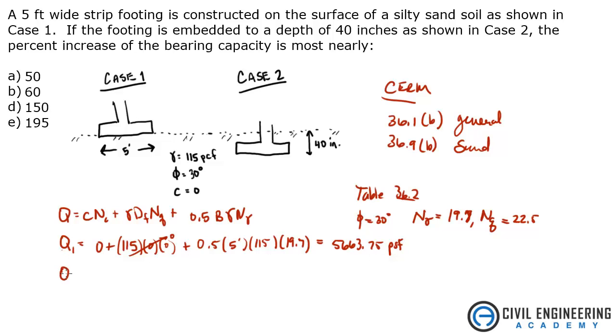Alright, so let's look at case two now. In case two, we also have zero cohesion, so this first term goes away.